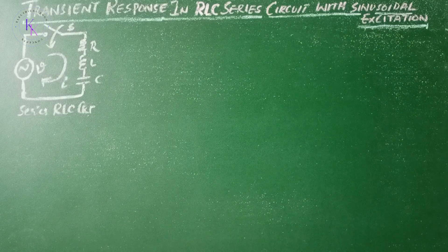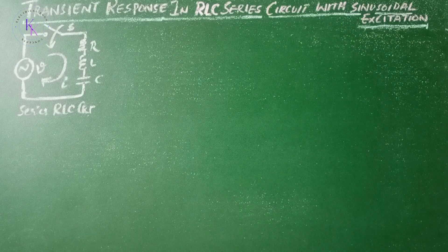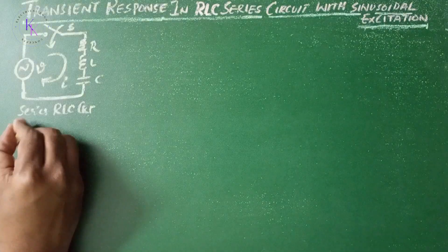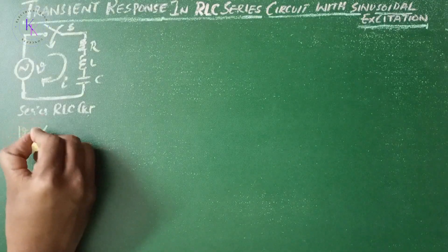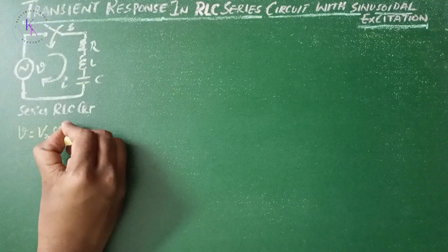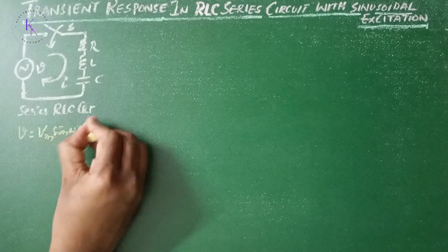Transient response of RLC series circuit with sinusoidal excitation. Let us consider a series RLC circuit having the sinusoidal excitation V equals Vm sin(ωt + φ).